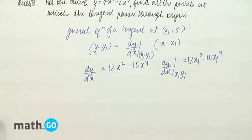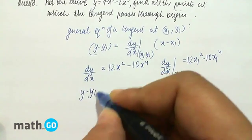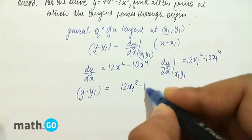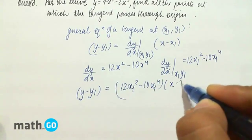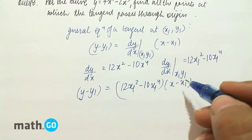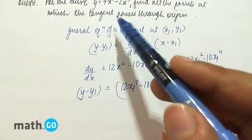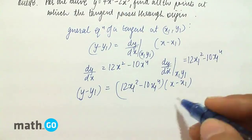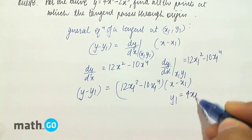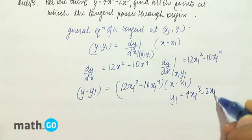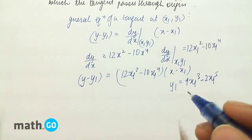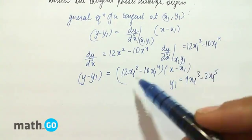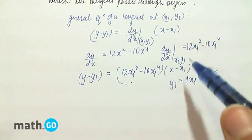Now keeping this in the equation we get y minus y1 equals 12x1 squared minus 10x1 to the power 4, into x minus x1. And since x1, y1 satisfies the curve — that is, that point lies on the curve — we have y1 equals 4x1 cubed minus 2x1 to the power 5. So putting this in, and we are given that this tangent passes through the origin.